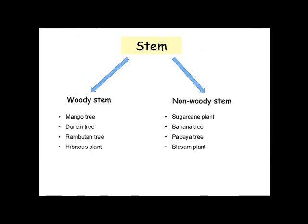Dear students, let's do a quick revise. Examples of woody stem plants are mango tree, durian tree, rambutan tree, and hibiscus plant. Examples of non-woody stem plants are sugar cane plant, banana tree, papaya tree, and balsam plant.